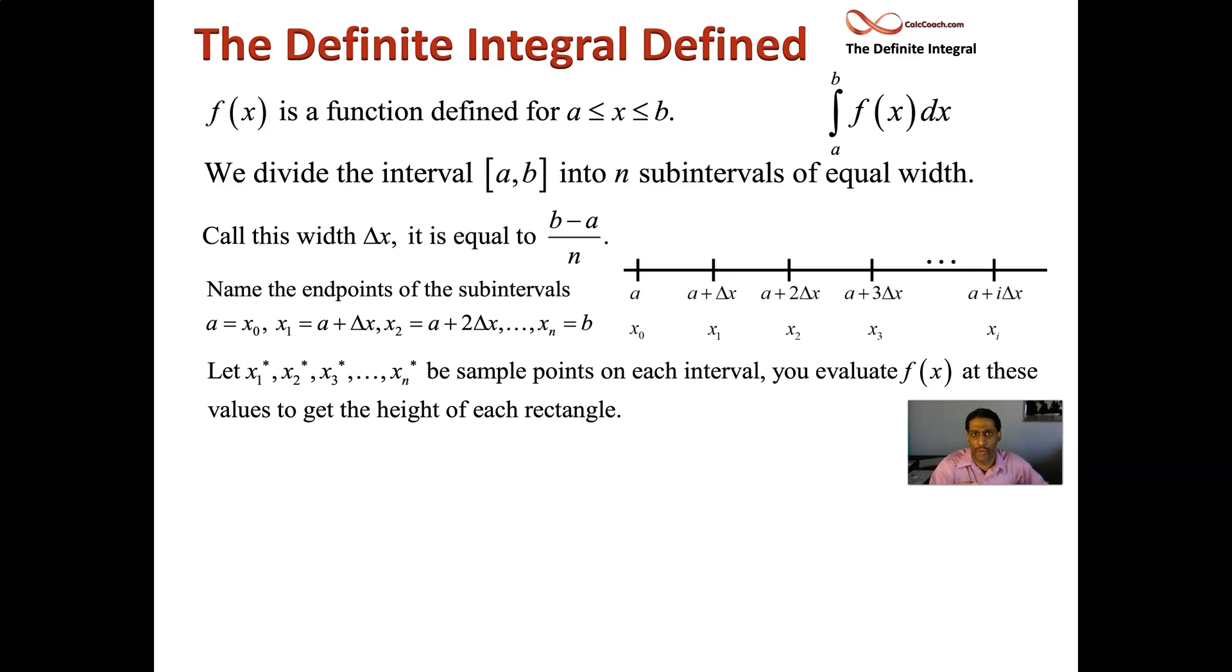So then what you do is you have to figure out where you're going to evaluate the height. So we're making rectangles and trying to find the area of these rectangles. Two dimensions define the area of a rectangle: the width, which we know as delta x, and then the height.